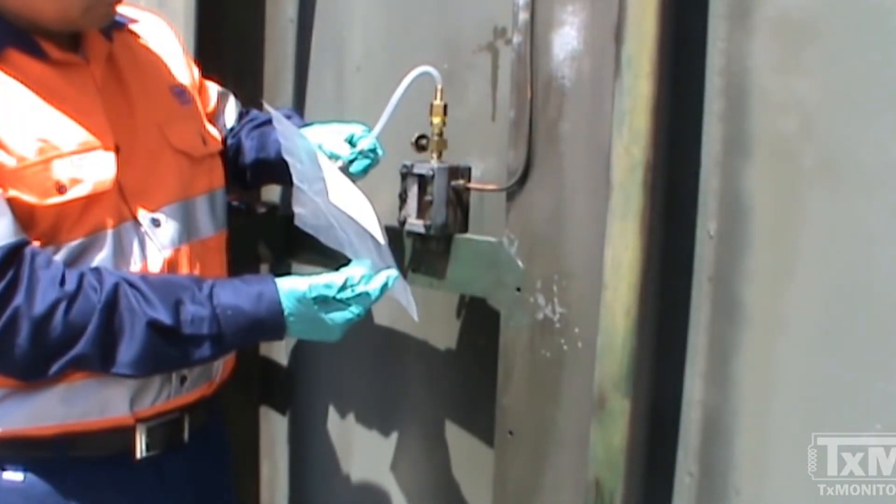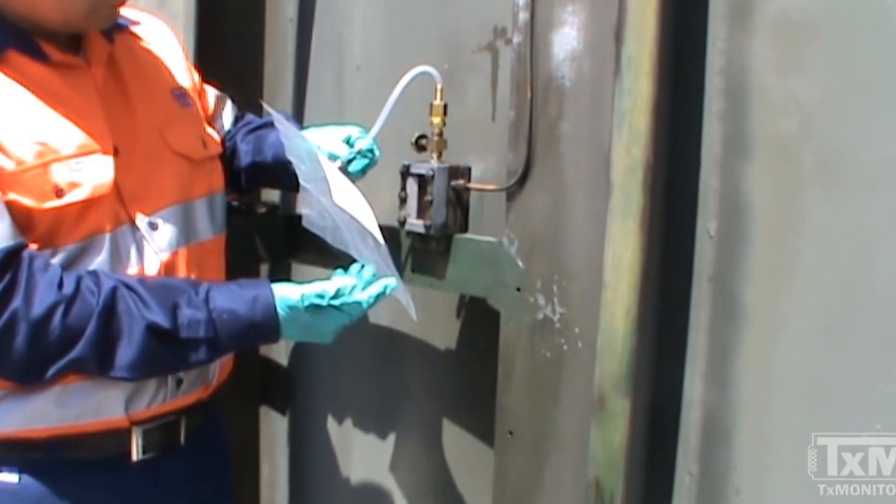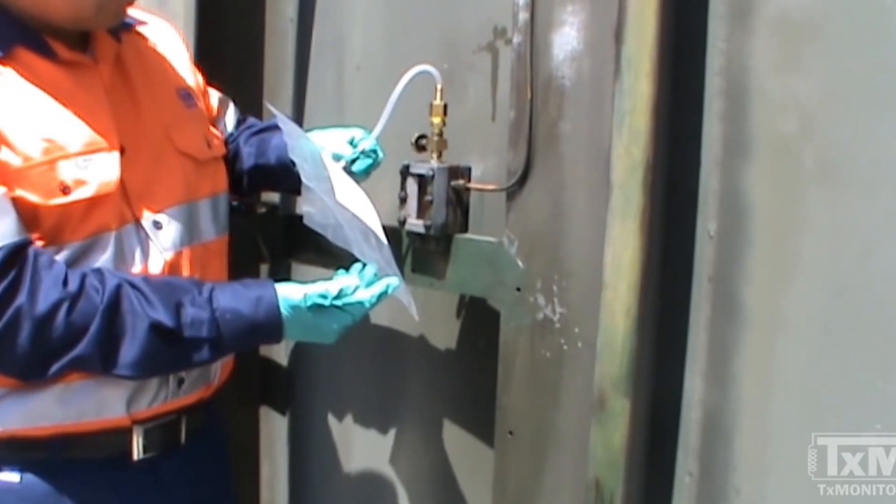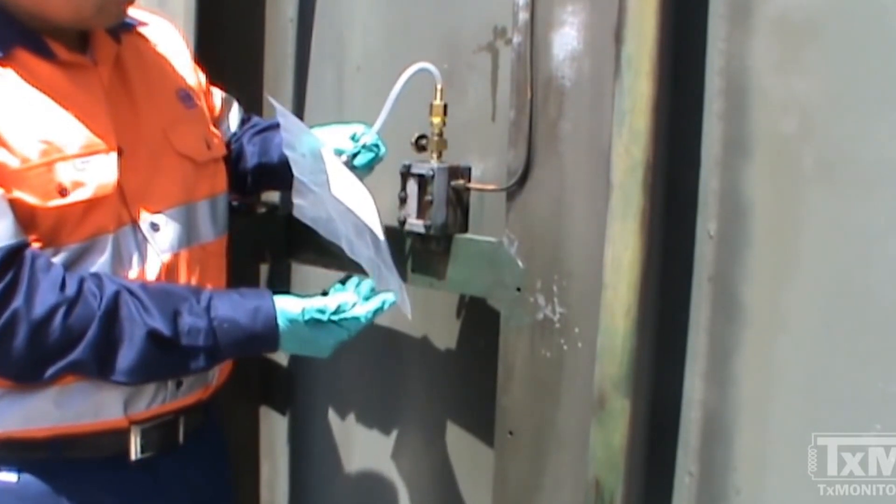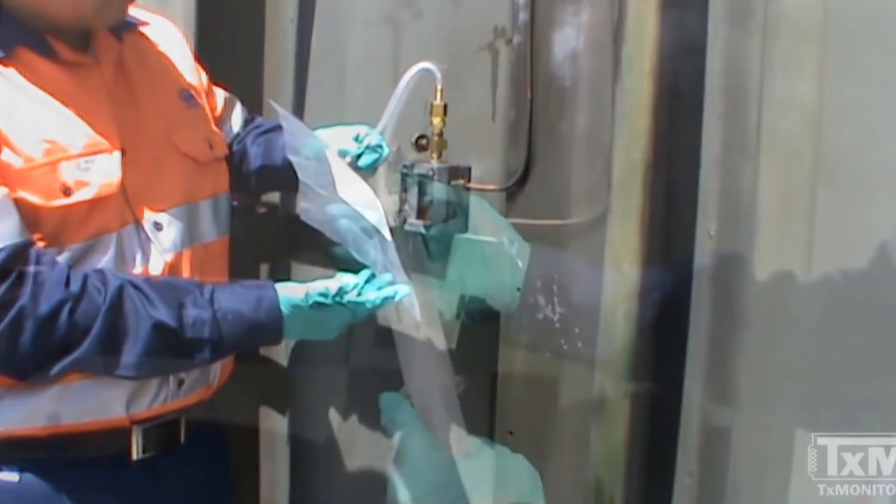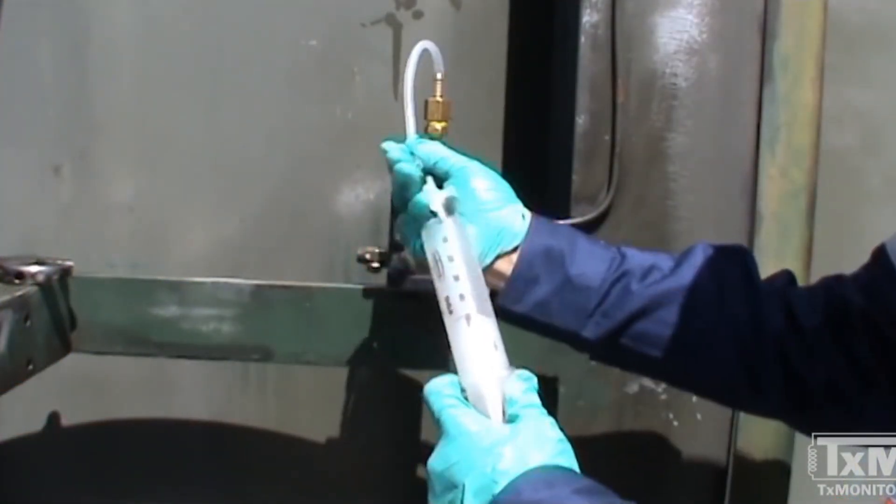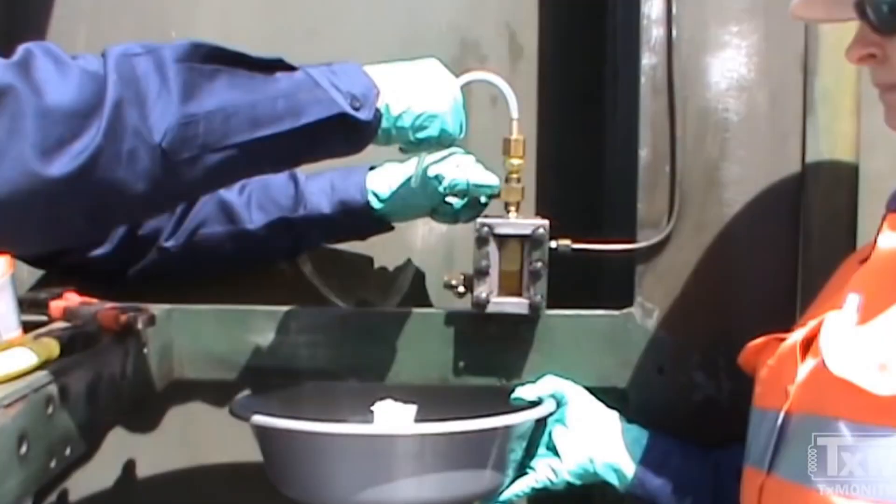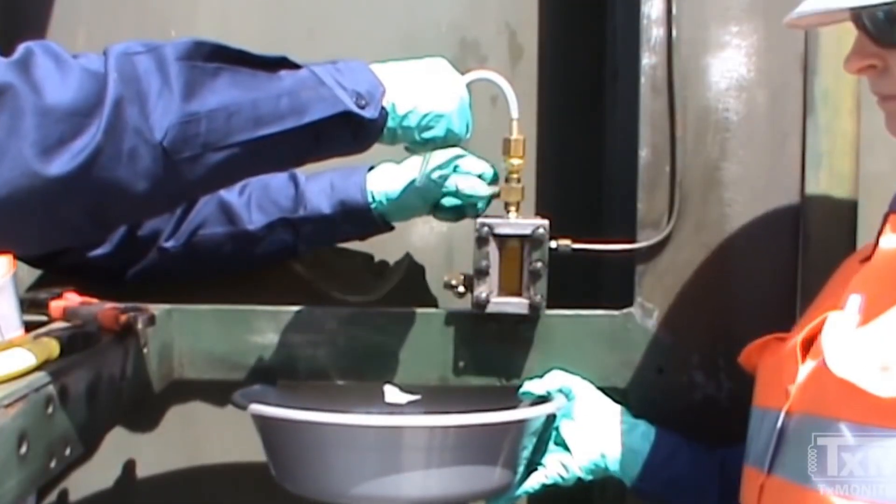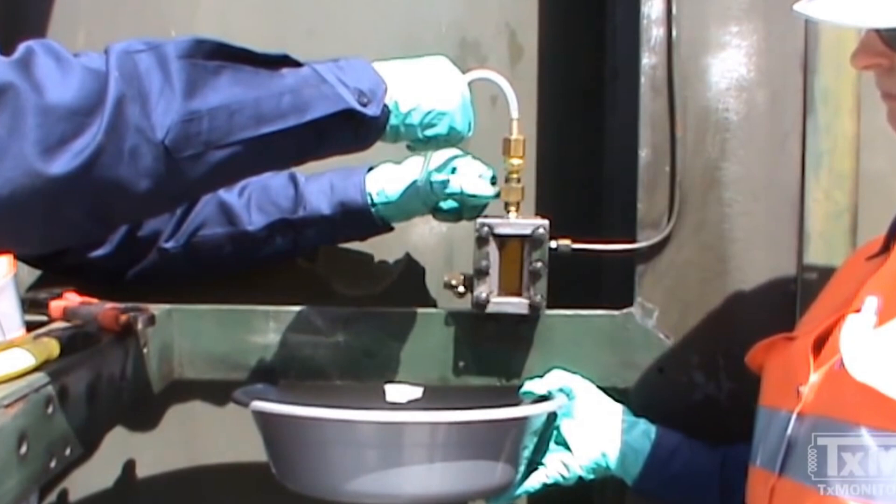Use additional syringes or bags if necessary to collect all the gas accumulated in the Buchholz relay. When all the gas has been retrieved, ensure that the gas sampling device is purged by opening up the top port until oil pours out.